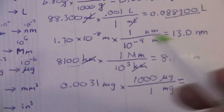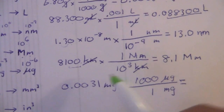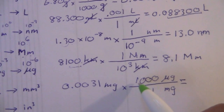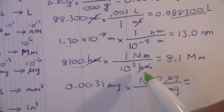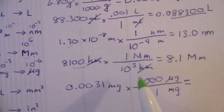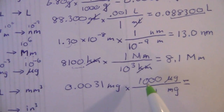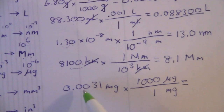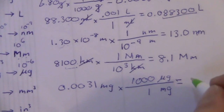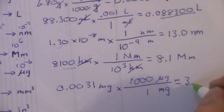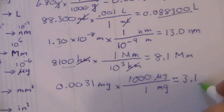So what happens to the decimal place? We're multiplying by 1,000, moving three places to the right. This gives us 3.1 micrograms.